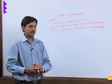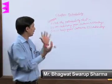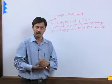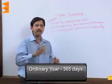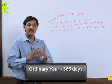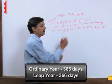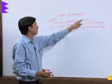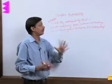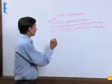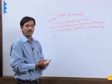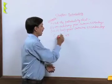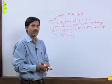Now we take a question where probability is related to two types of years: ordinary year and leap year. An ordinary year contains 365 days, whereas a leap year contains 366 days. The question is: find the probability that an ordinary year contains 53 Mondays. A week has all 7 days: Monday, Tuesday, Wednesday, Thursday, Friday, Saturday, and Sunday.